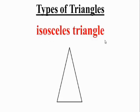An isosceles triangle has only two sides that are equal, and the third side is of a different length. So this is called an isosceles triangle.